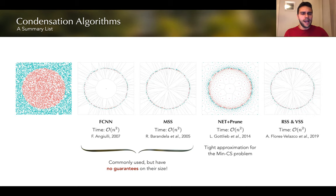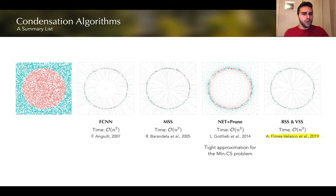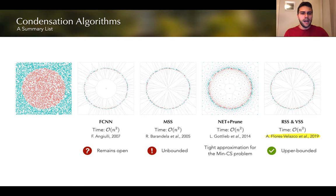More recently, in last year's CCCG, we proposed two new algorithms called RSS and VSS, and in that paper we showed that these two algorithms can be upper bounded. At the same time, we showed that MSS cannot be bounded in the same ways, and it remained open whether FCNN could have similar results. In this year's paper, we solved this problem and showed that while the original FCNN algorithm cannot be bounded just as MSS, there's a slight and simple modification of the algorithm that can be successfully analyzed.